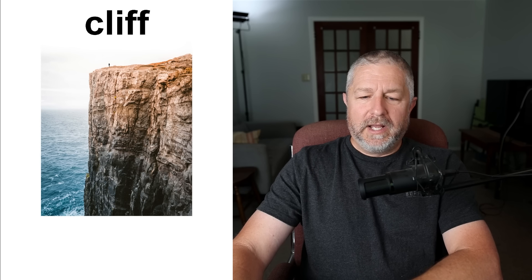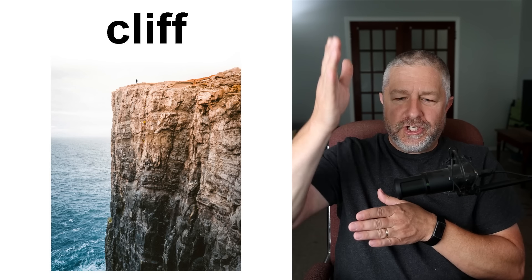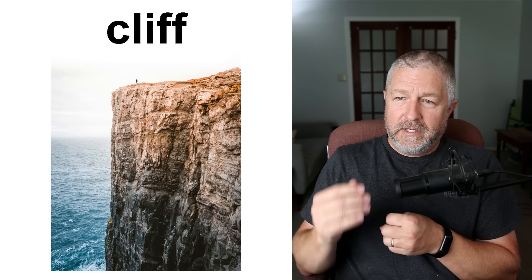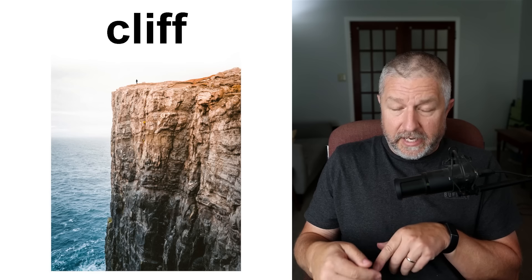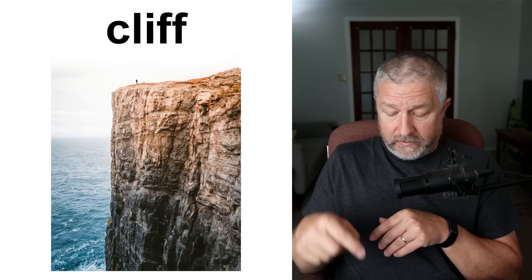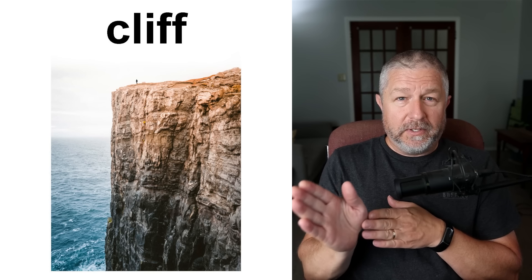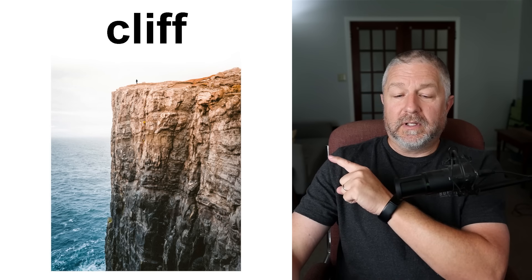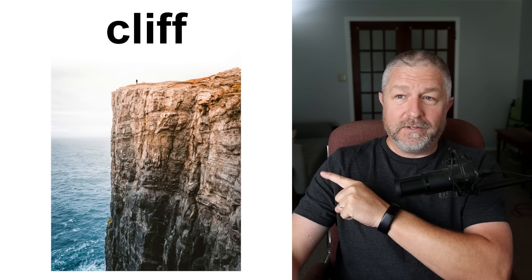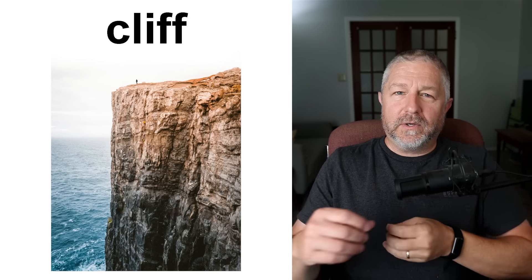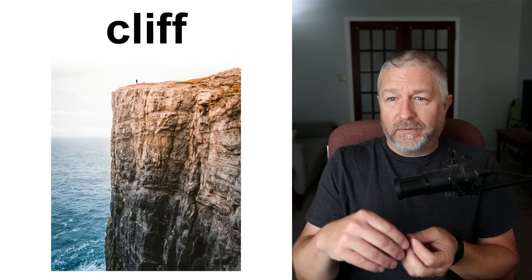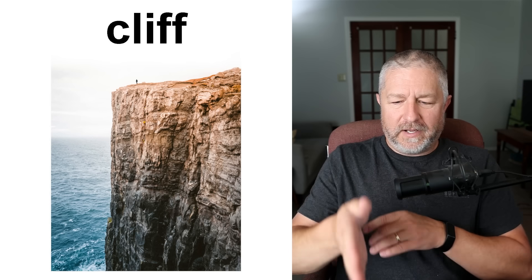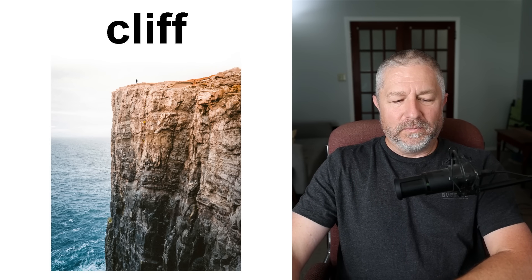A cliff. A cliff is a sheer drop where the land ends and goes almost straight down. You might walk to the edge of a cliff and look down to see water or simply land below. A cliff can happen along the coast, in a mountain range, or just about anywhere. Some people like to climb cliffs — I don't, I'm afraid of heights — and some people like to go cliff jumping into water, which I don't like doing either.